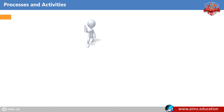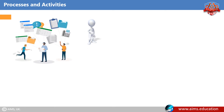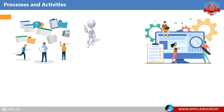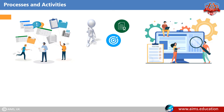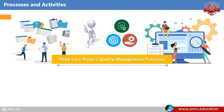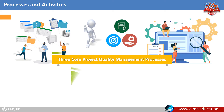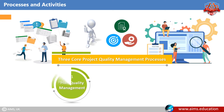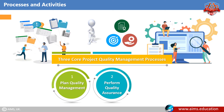Processes and Activities: In order to satisfy the project needs, the processes and activities of Project Quality Management determine Quality Policies, Objectives, and Responsibilities. There are three core Project Quality Management processes: Plan Quality Management, Perform Quality Assurance, and Control Quality.